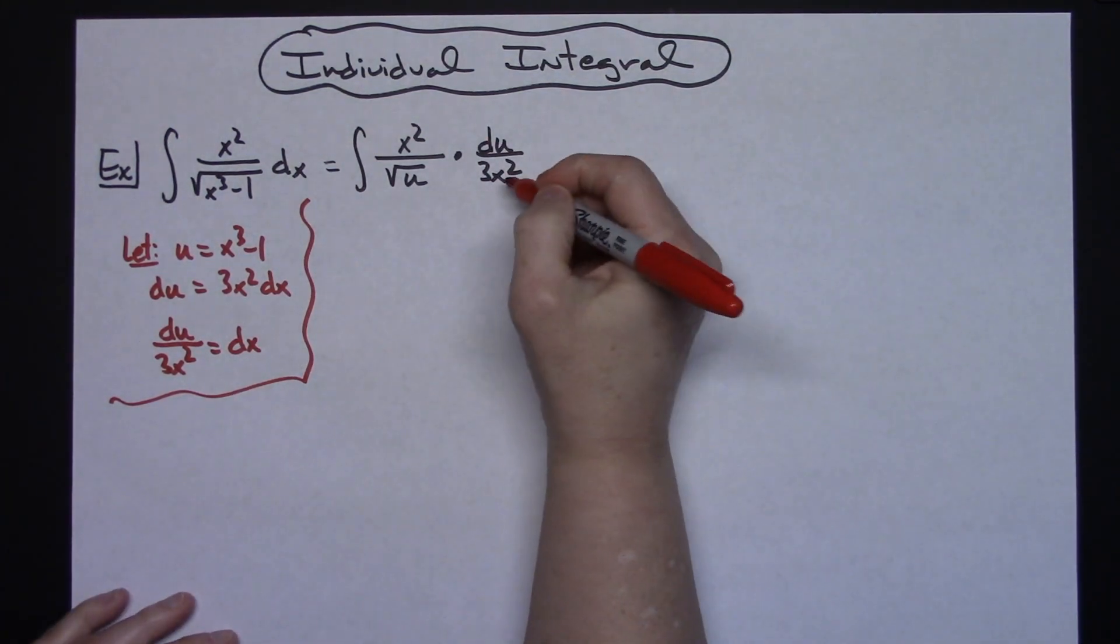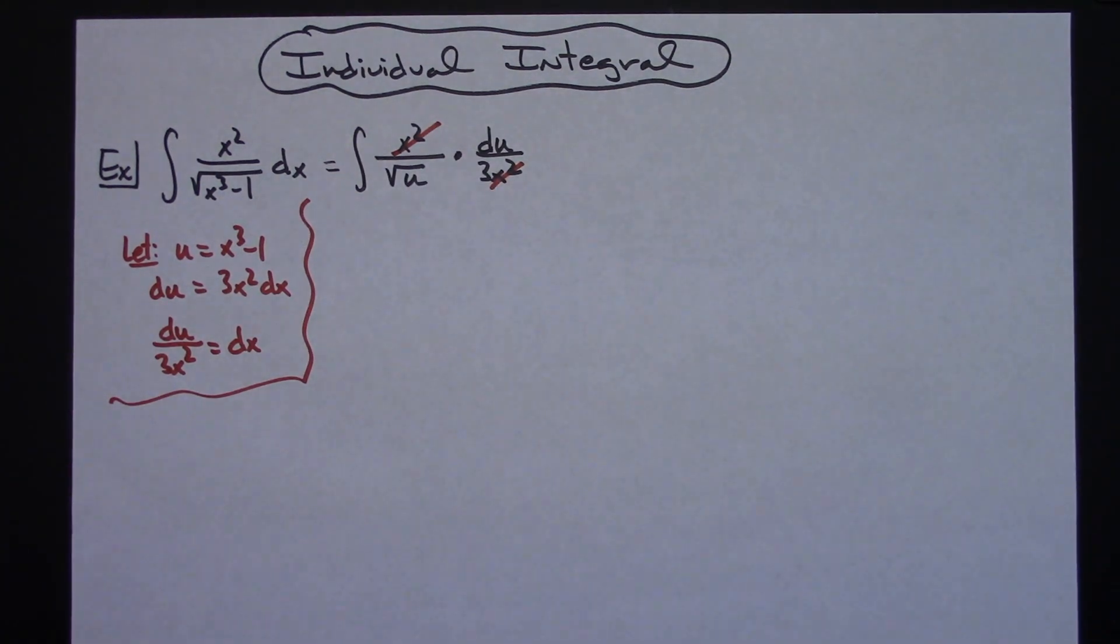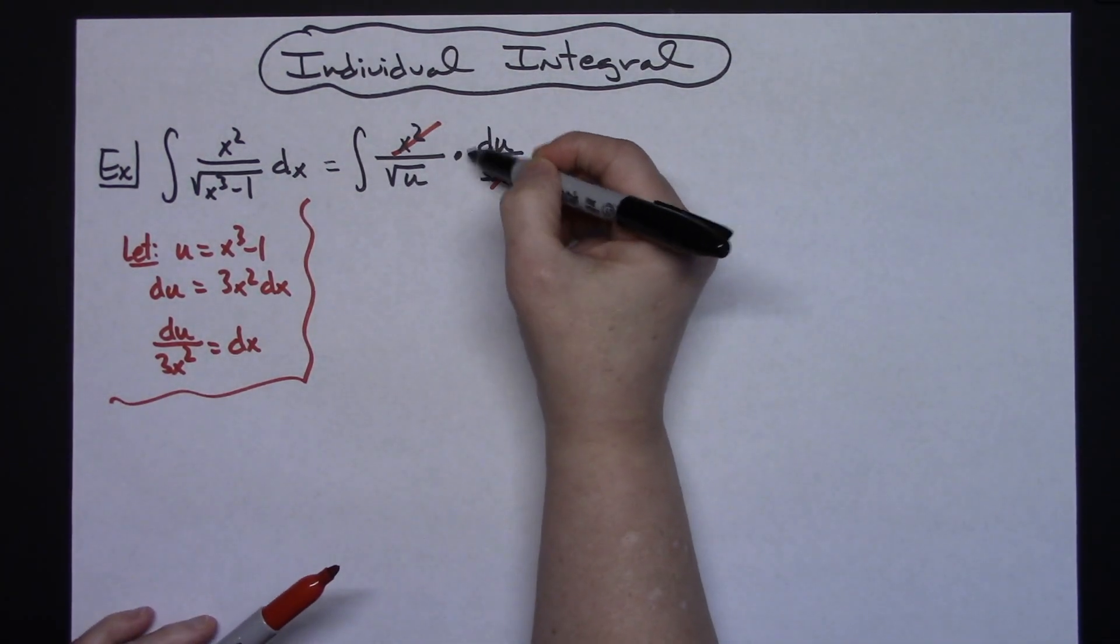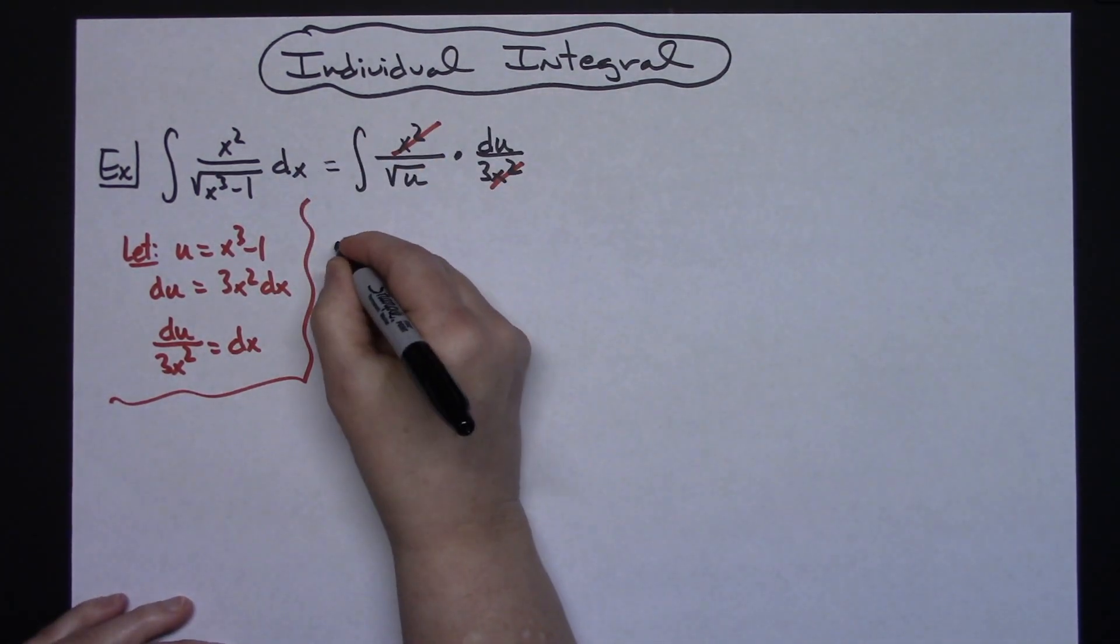What that's going to allow us to do is take those x² terms and cross them out. Hopefully you can see that a 1/3 is going to come out in front of the integral.